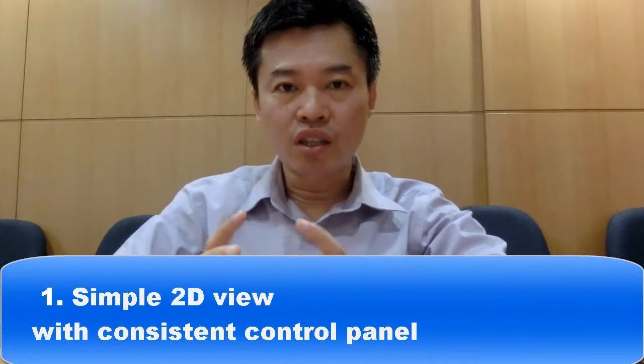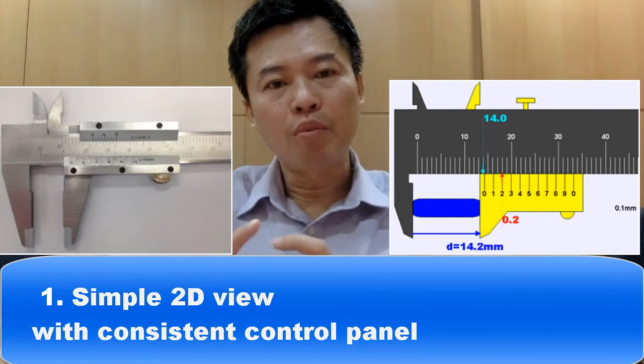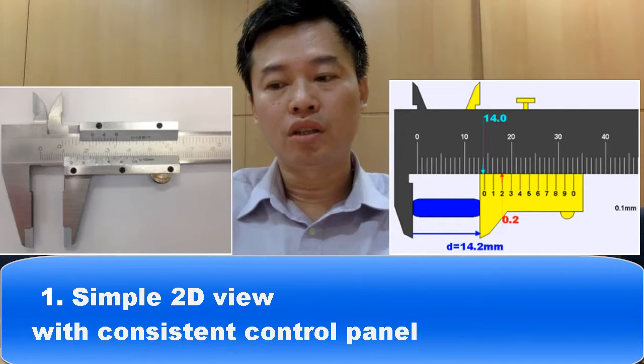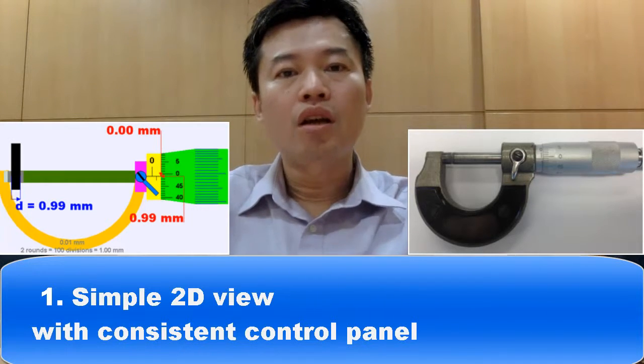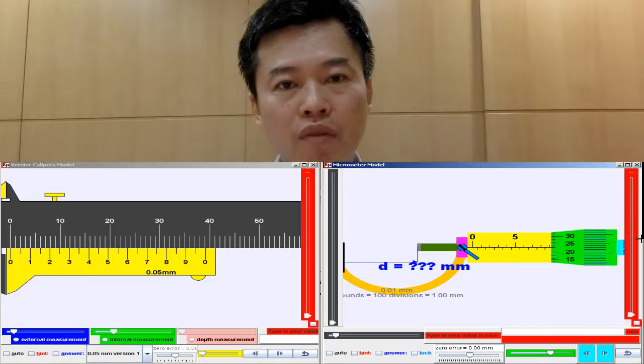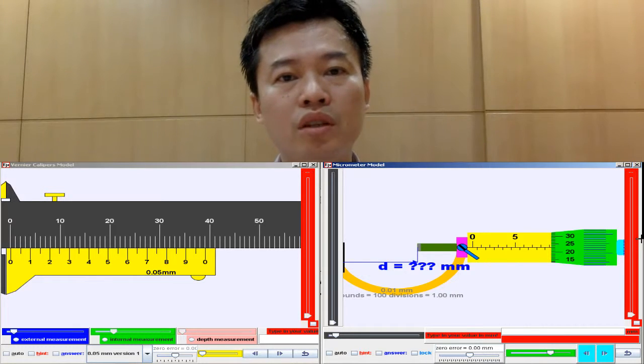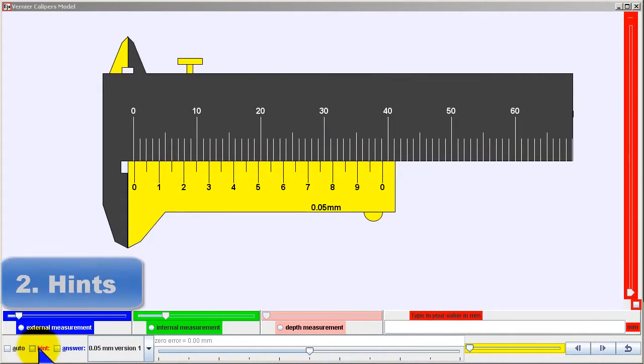Number one: a simple 2D view associated with the real equipment to bring out direct association to the tools better, as well as a consistent control panel layout at the bottom of our simulations to allow students to become familiar very quickly.